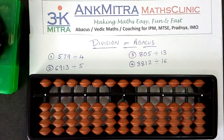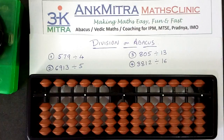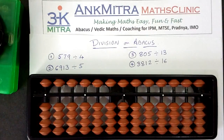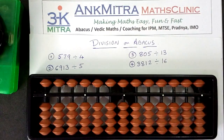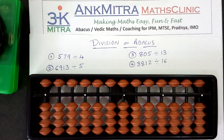The first two examples, as you can see written on the paper, are basically three or four digit numbers divided by a single digit number. The next two examples are with divisors having two digits. So let's see both these types. Let's start with the first example: 579 divided by 4.